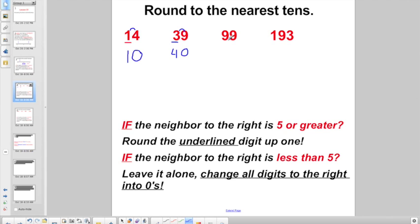Check out this one. It sometimes messes up 5th graders. 9 is the digit in the 10 spot. Now the neighbor to the right is definitely more than 5. So I'm going to round the underlined digit up 1. What's 1 up from 9? Well, that would be 10, right? And everything to the right becomes a 0. Hey, that's 100.